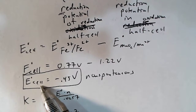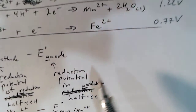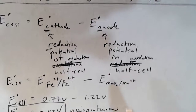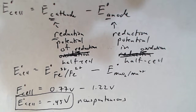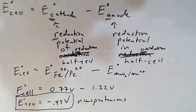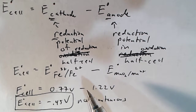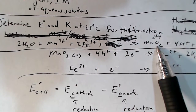Now we can solve for the voltage of the cell by plugging the reduction potentials into cathode minus anode, and we get negative 0.45 volts. That's negative — a non-spontaneous reaction. This reaction is not necessarily spontaneous, it's not necessarily going to have a positive voltage. That's why we had to figure out what is at the cathode and what is at the anode.